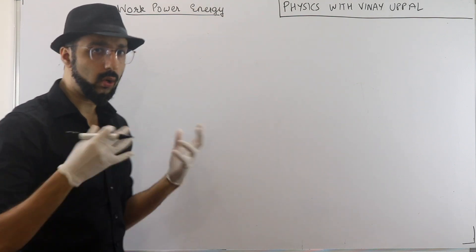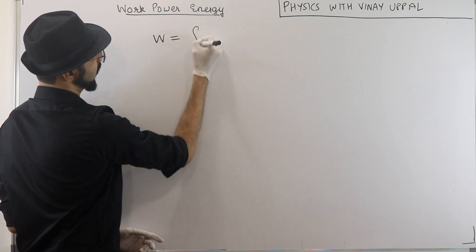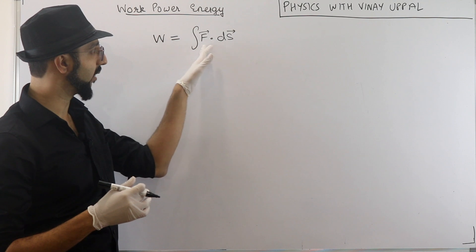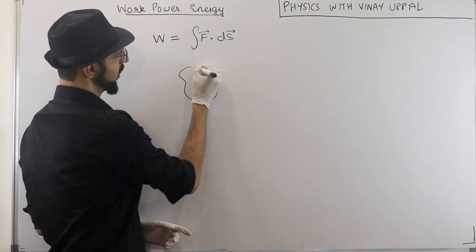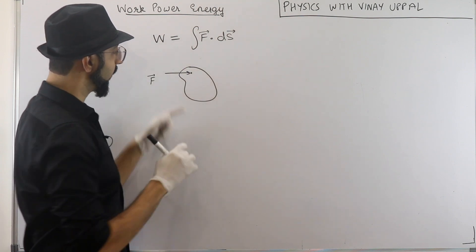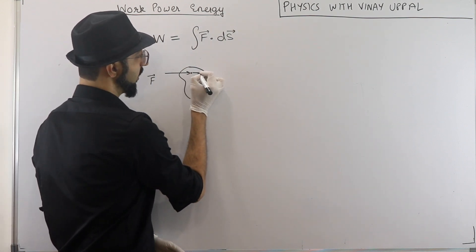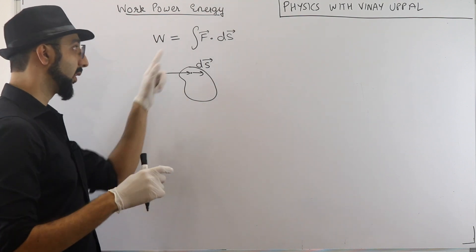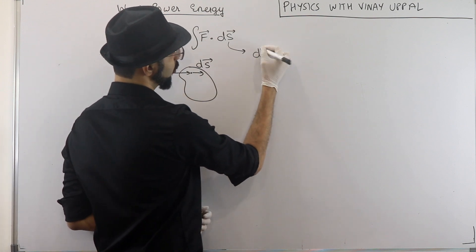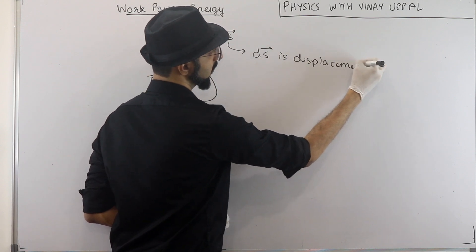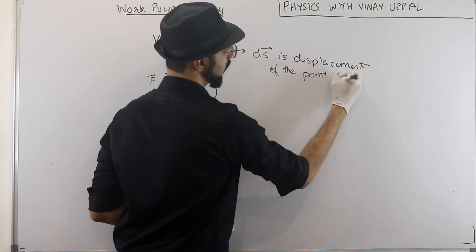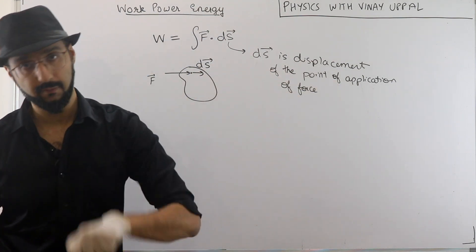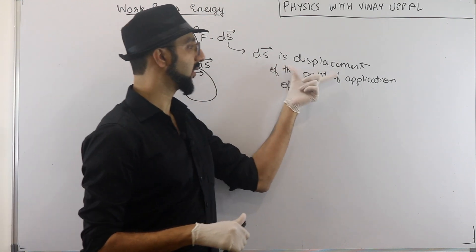So, what exactly is work? Work is defined — and I am going to give you the mathematical definition — as force, a dot product with the displacement vector. Let us analyze this very carefully. What do these quantities mean? If I have any body, if a force is acting at one point of the body, the displacement ds vector in some dt time. So the work done by the force is equal to integral F dot ds. Here ds is the displacement, obviously in dt time, of the point of application of force. This statement is very important.